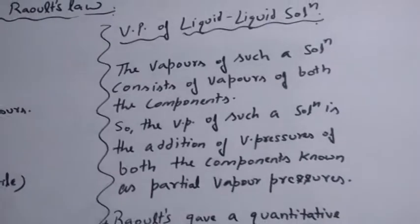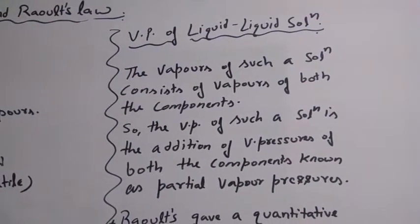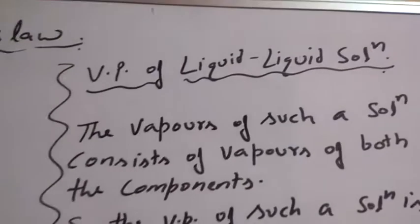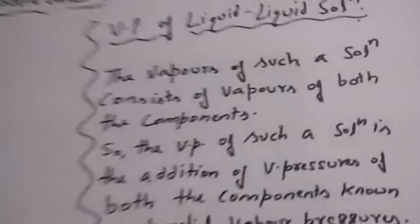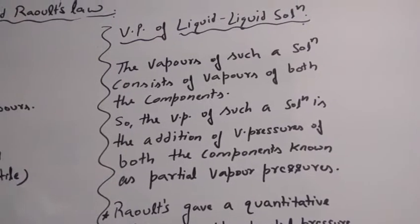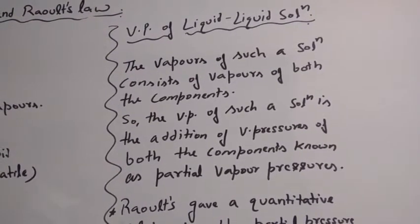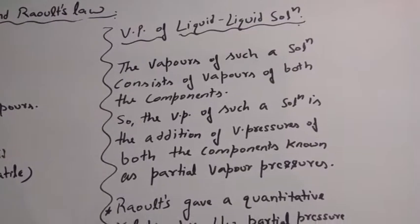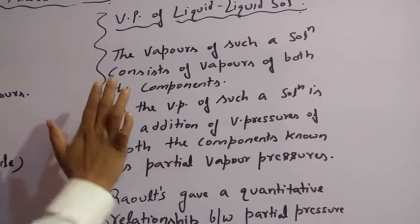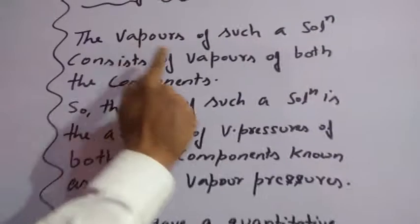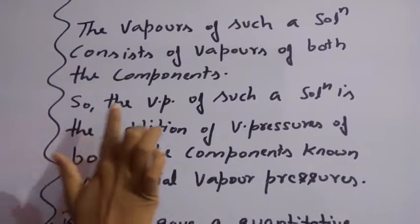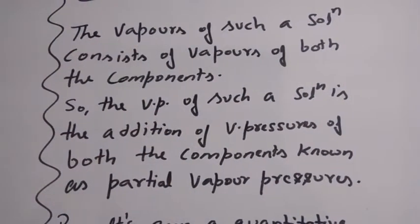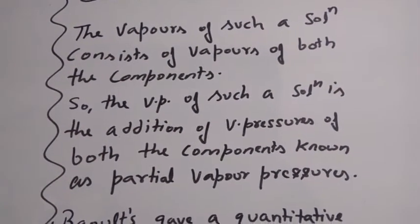Now we are going to discuss vapor pressure of two types of solution. The first type, as you are looking on the blackboard, is vapor pressure of liquid-liquid solutions. By liquid-liquid solutions, I mean the solution consists of two volatile solvents. The vapors of such a solution consist of vapors of both components, so the vapor pressure of such a solution is the addition of vapor pressure of both the components.